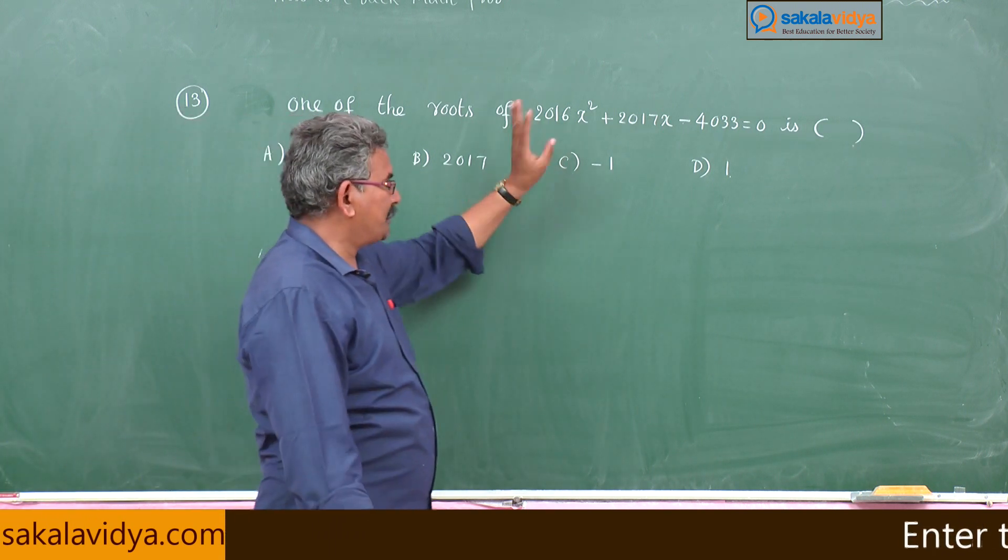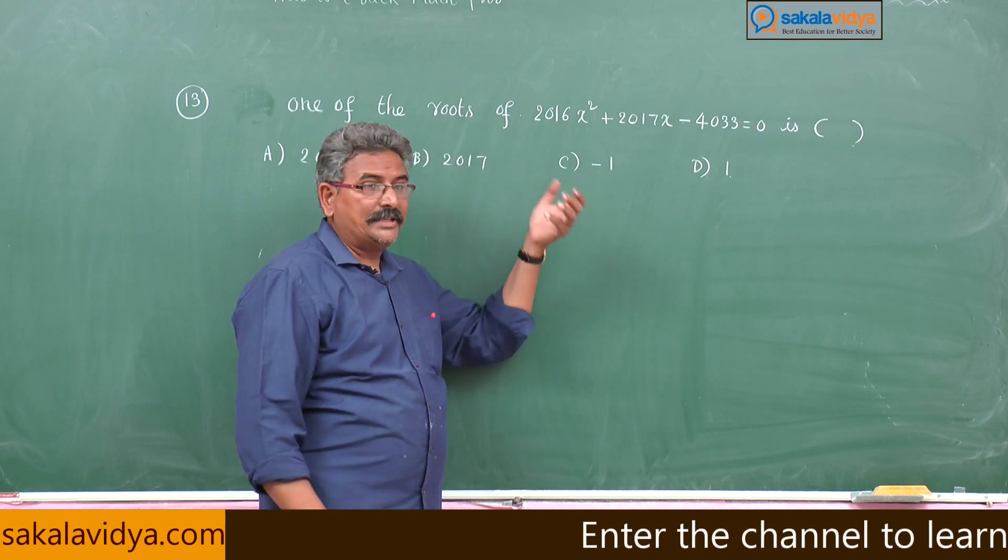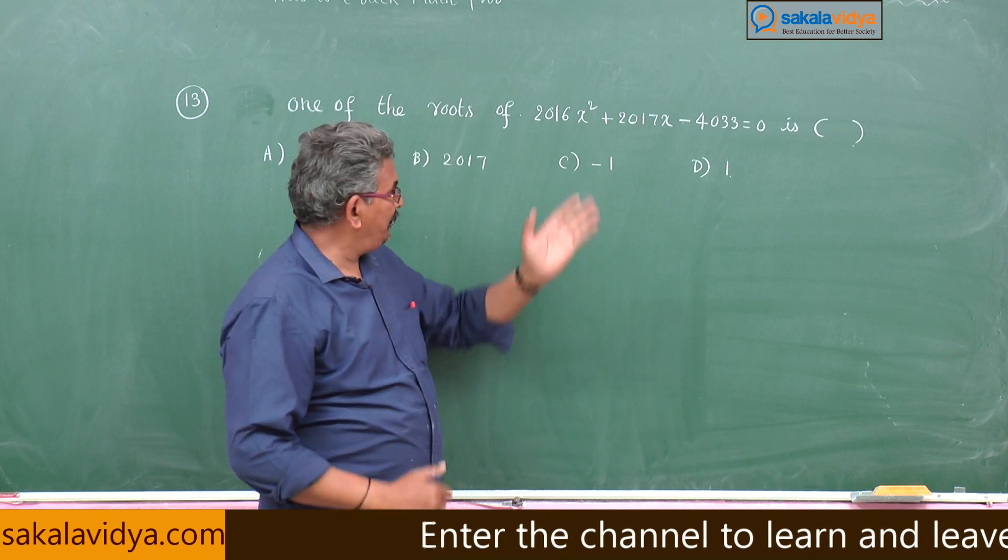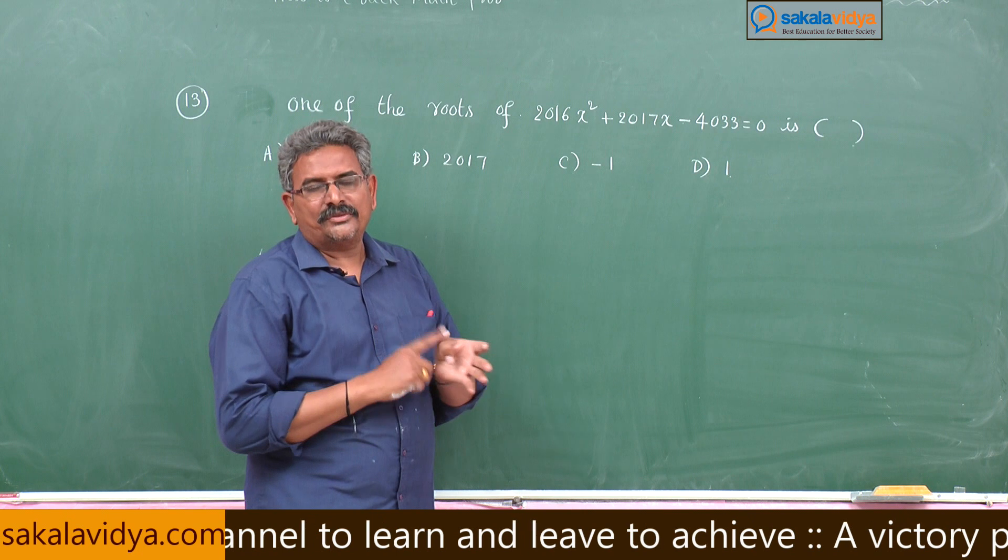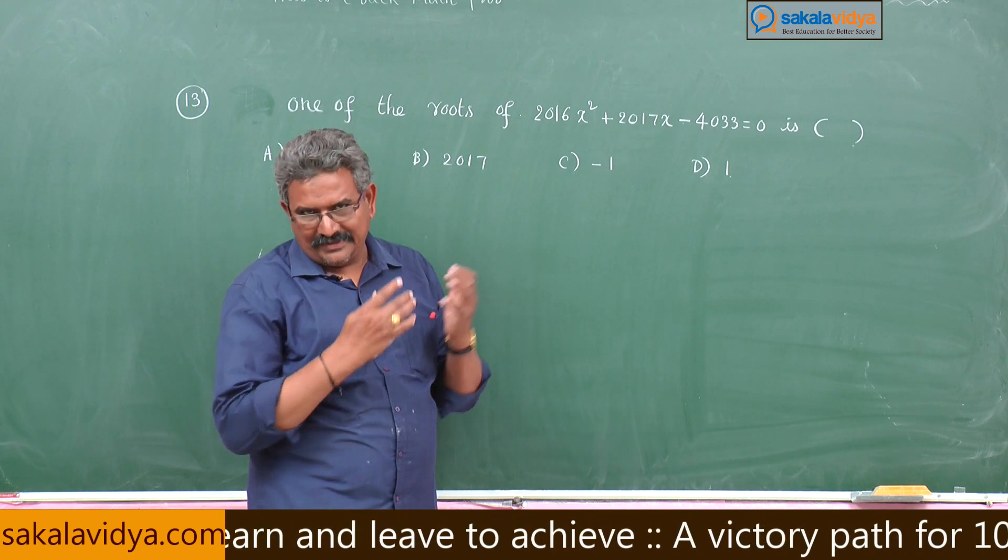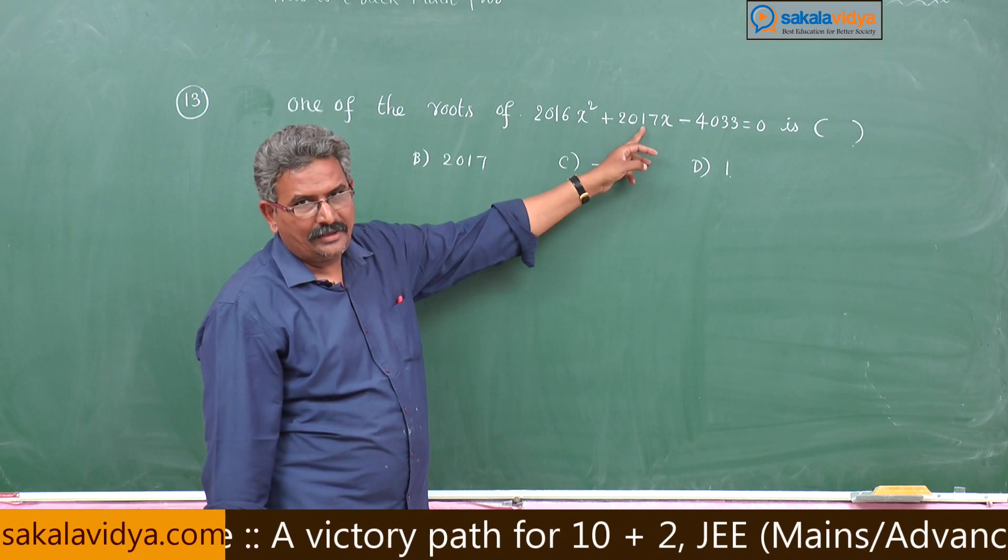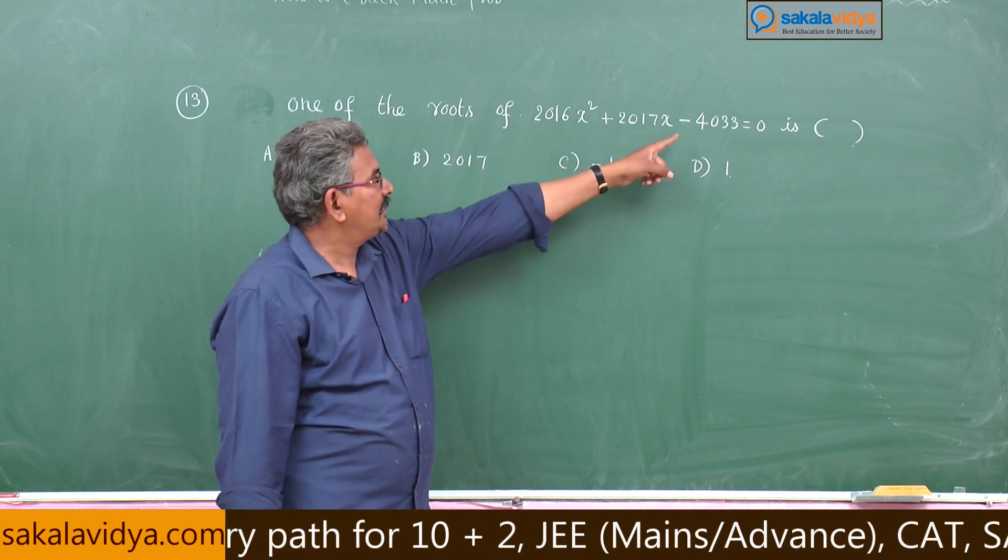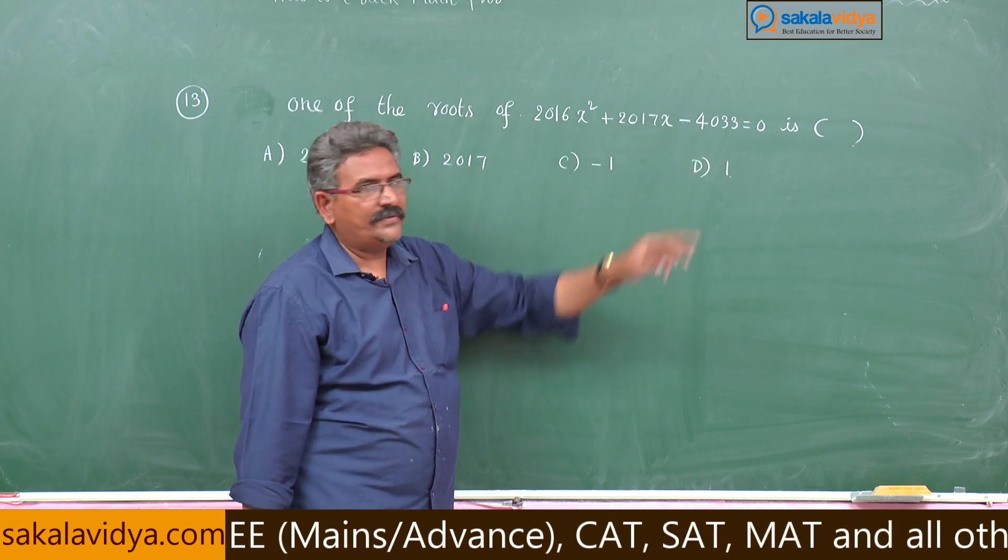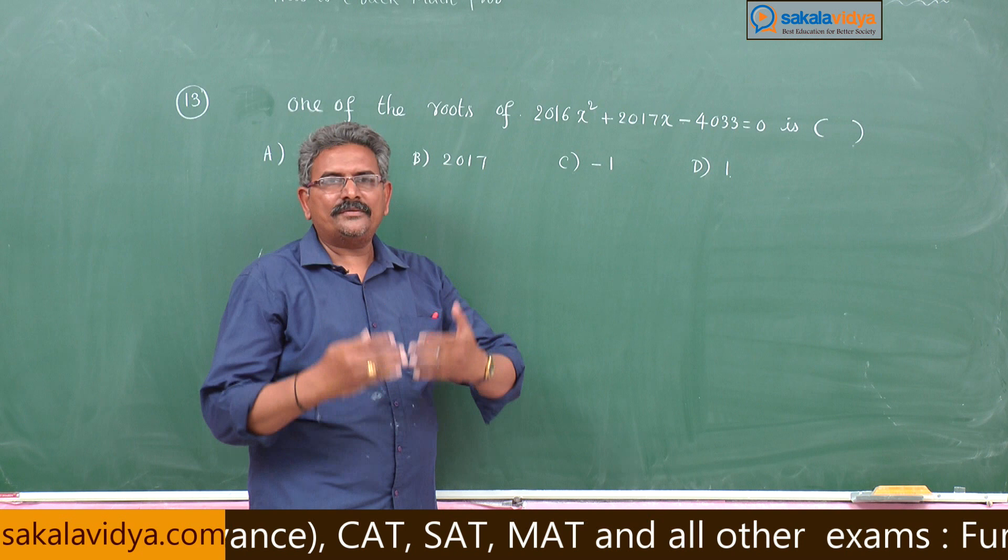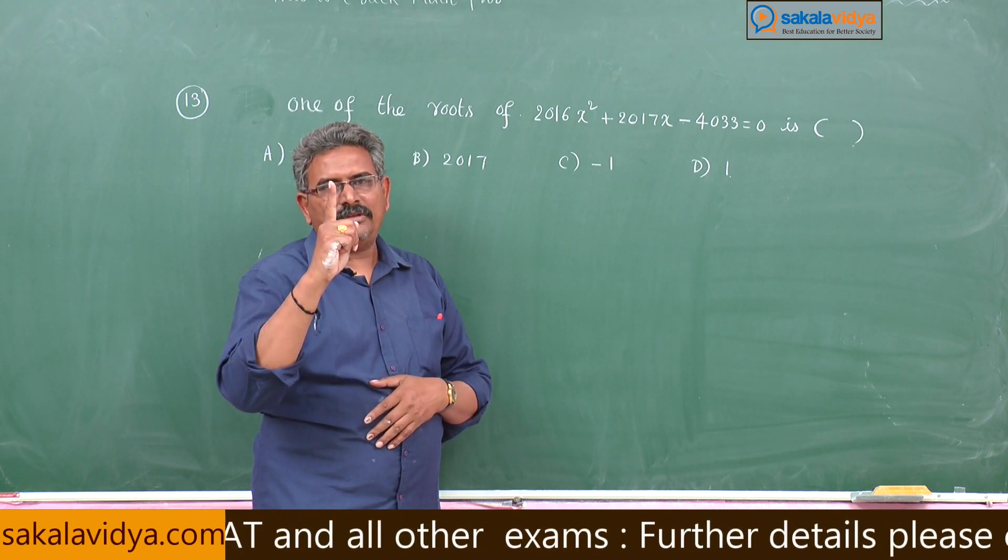Generally by observing this problem, we may attempt this problem - very bigger values are there: 2016, 2017 and 4033. But very simple, just if you observe 2016 plus 2017, how much? That is 4033. If you add all the coefficients you get 0. So if sum of the coefficients of the given equation is 0, then 1 will be the one root.